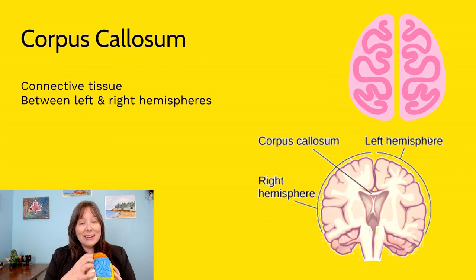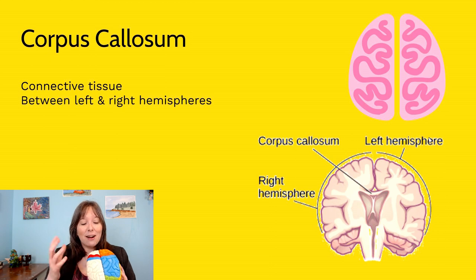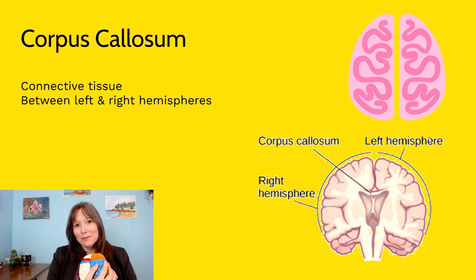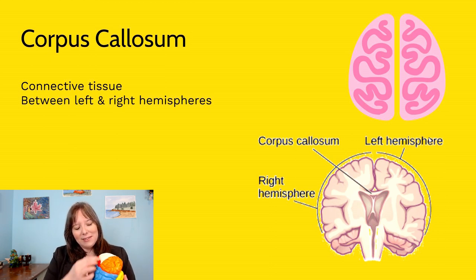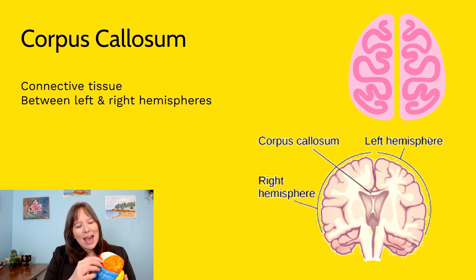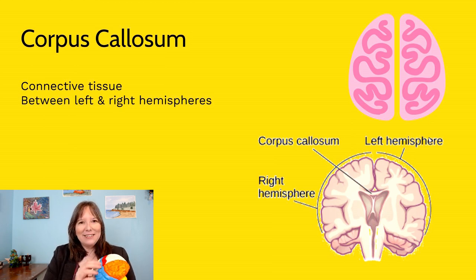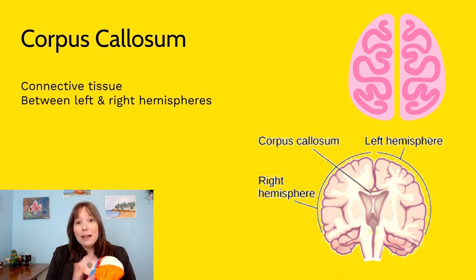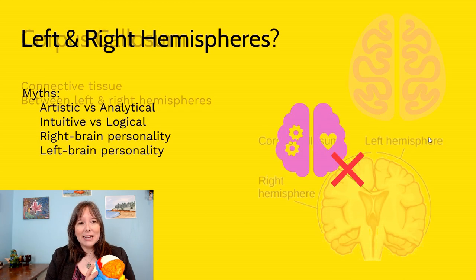The corpus callosum is connective tissue — axons, if you will — that helps to connect our left and right hemispheres. It runs along the grand fissure and connects the two hemispheres.